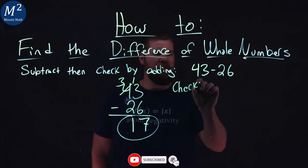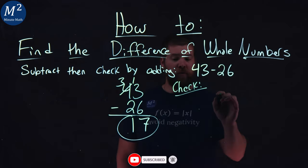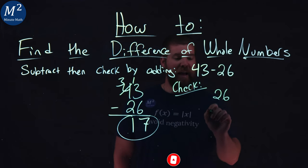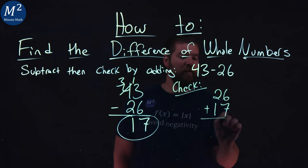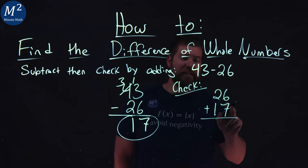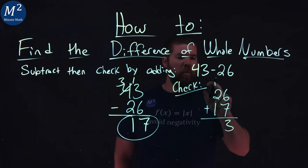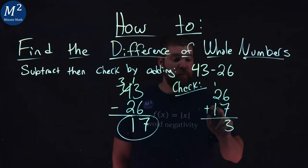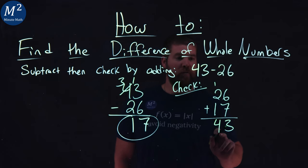Now let's check. They asked us to do that. So what we're going to do is take a 26, and I'm going to add a 17 to it, ensuring all of our place values are lined up. 6 plus a 7 here is a good old 13. 3, carry the 1. 1 plus 2 is a 3, plus 1 is a 4. 43, which we should have, matches back up.